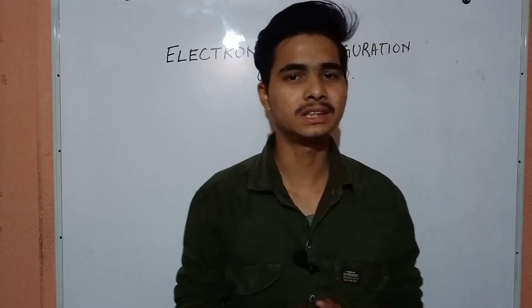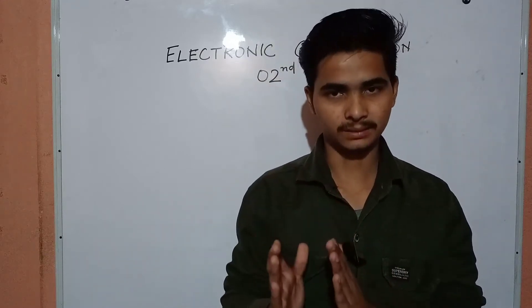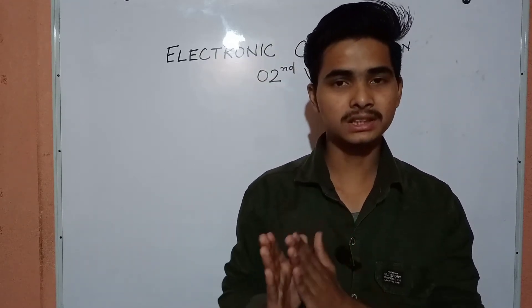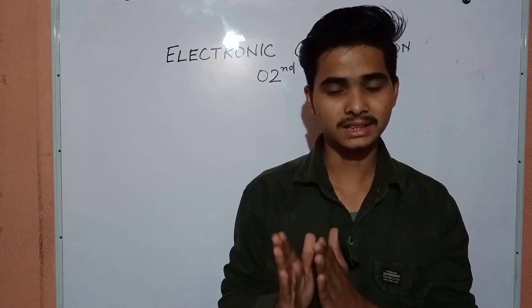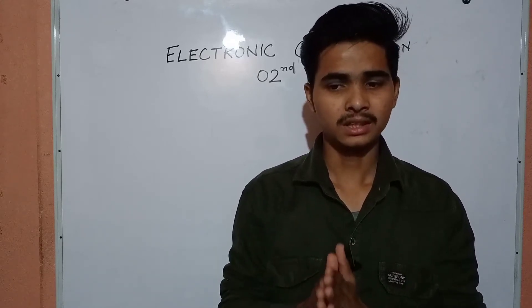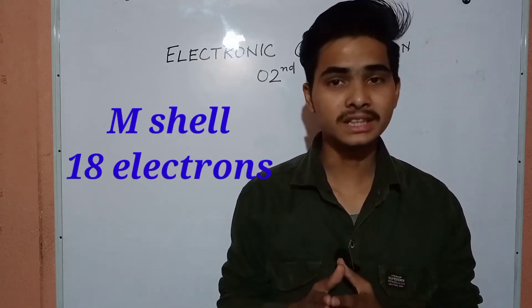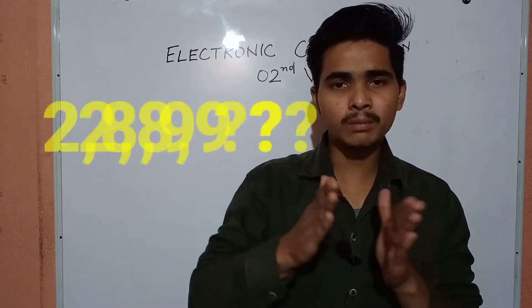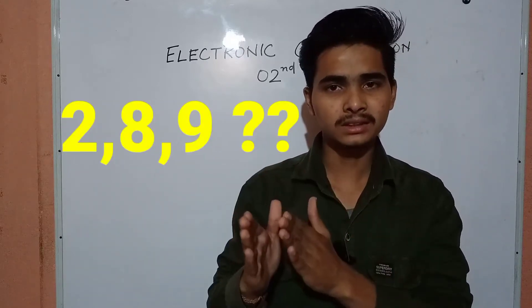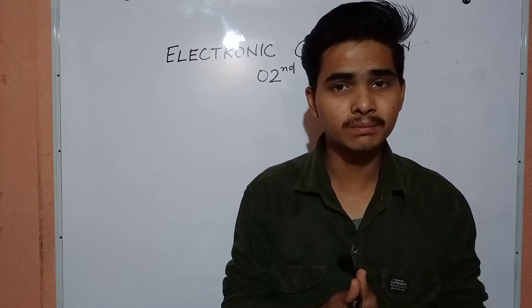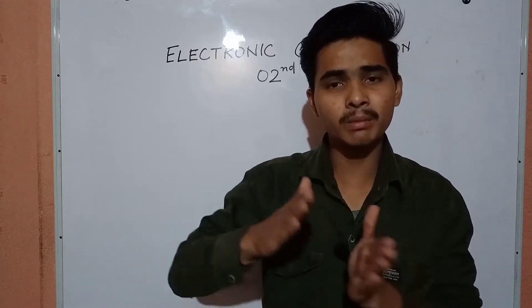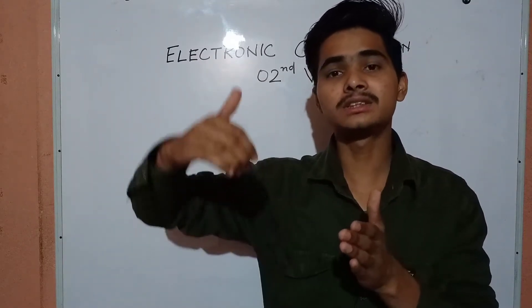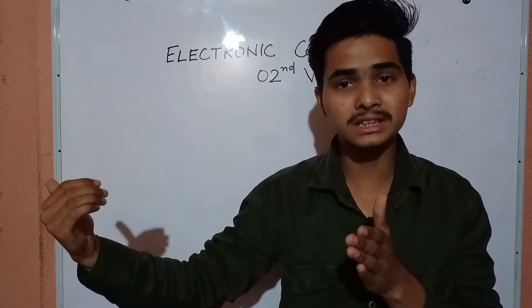But the question is: in the third shell, that is in the M shell — understand this carefully — we can have a maximum of 18 electrons. Then why is the electronic configuration of potassium not 2, 8, 9? Why is the ninth electron transferred to the next shell?